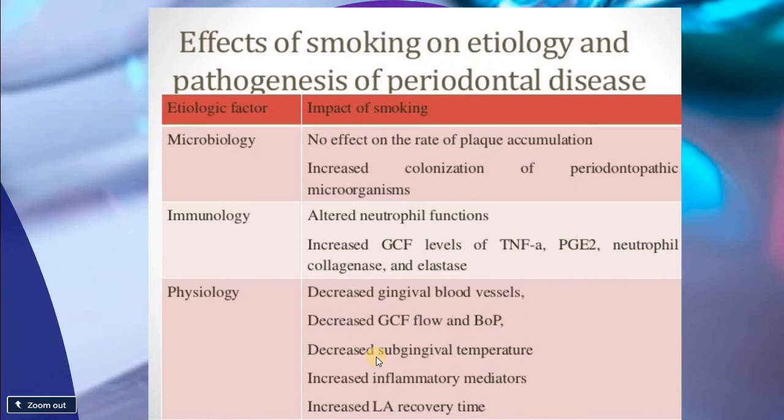Regarding immunology, there will be impaired neutrophil dysfunction, altered neutrophil functions, and increased gingival crevicular fluid. There will be more tumor necrosis factor, prostaglandin E2, neutrophil collagenase, and elastase. The release of these cytokines and chemokines affects both bone and collagen fibers — prostaglandin E2 affects bone metabolism, while matrix metalloproteinases affect collagen metabolism.